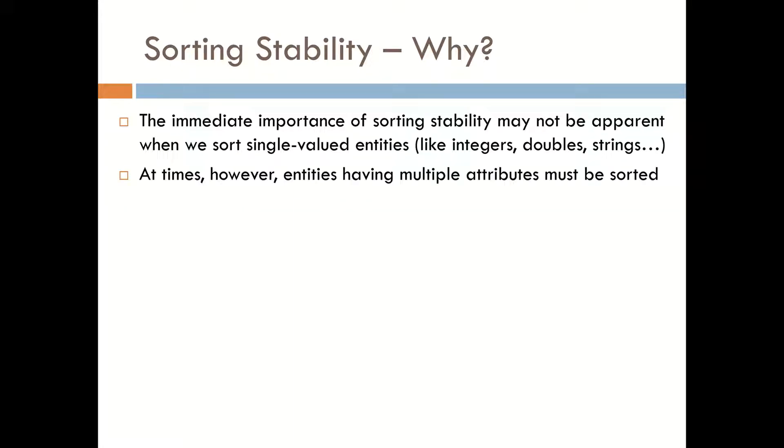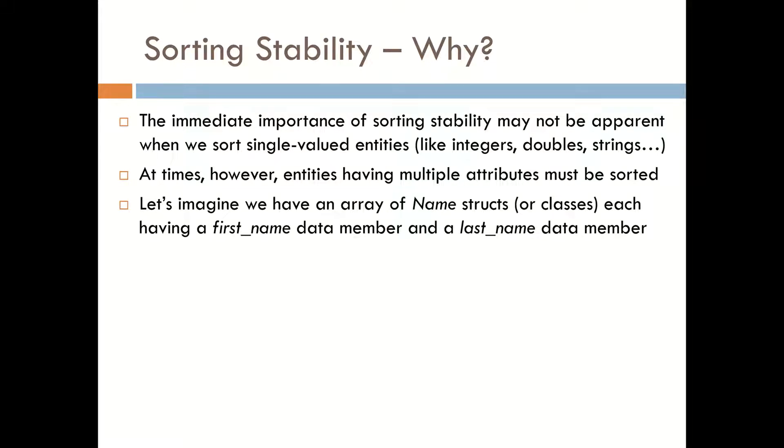However, there are times when entities having multiple attributes need to be sorted. And it is here that we see the actual value of sorting stability. So let's imagine that we have an array of some name structs, and so name is a type here, or name classes. And each of these have a first_name data member and a last_name data member.